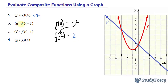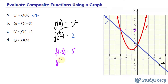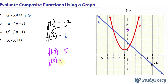For question B, we have g composed of f at negative 3. So let's find out what f at negative 3 is. At negative 3, we have an f value that is 5, right here. Now we find out what g at 5 is. g at 5 will be negative 3. So the answer is negative 3 for question B.